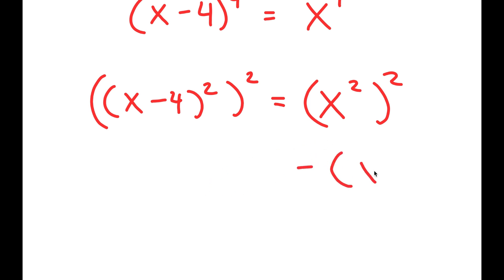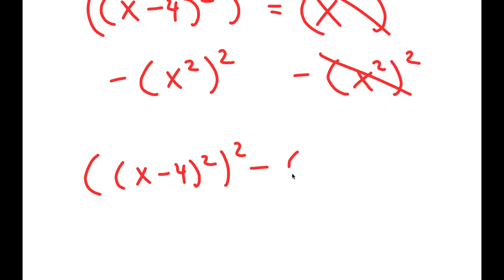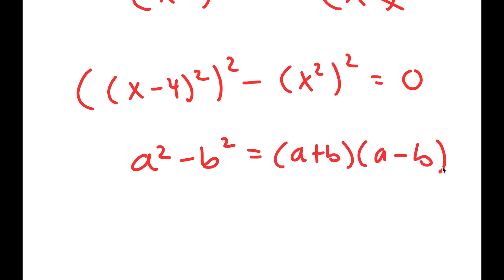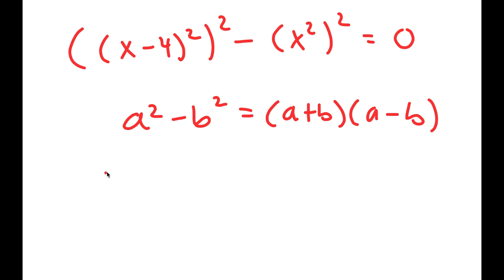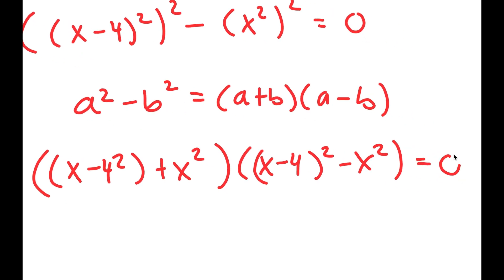Now I'm going to subtract x to the power of 2 to the power of 2 on both sides. These two cancel out, and I get (x minus 4) squared to the power of 2 minus x squared to the power of 2 is equal to 0. Now if I have something in the form a squared minus b squared, this is equal to a plus b times a minus b. So now I get (x minus 4) squared plus x squared times (x minus 4) squared minus x squared is equal to 0.